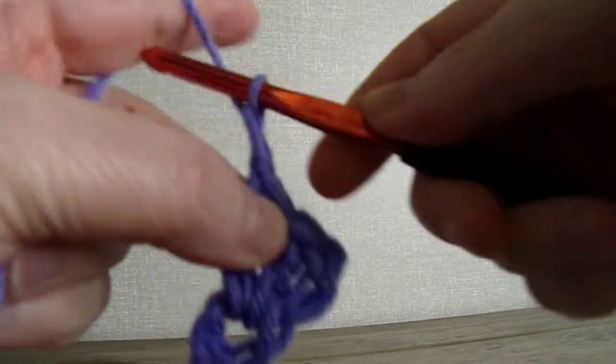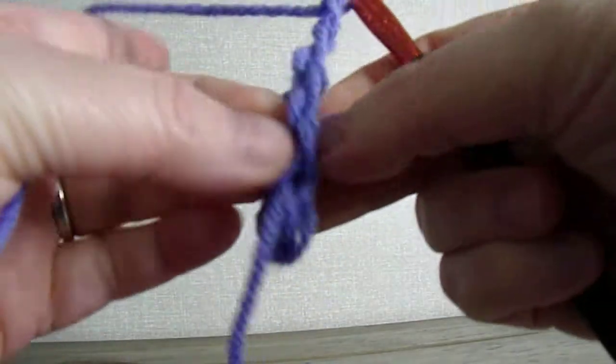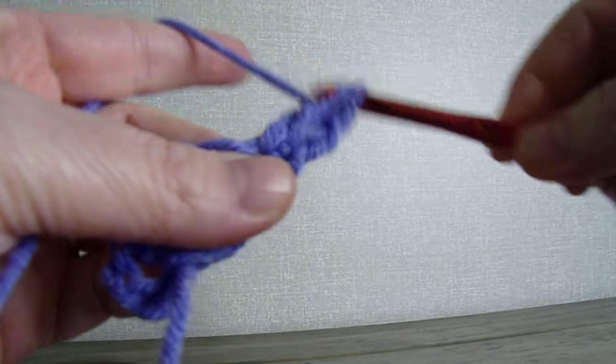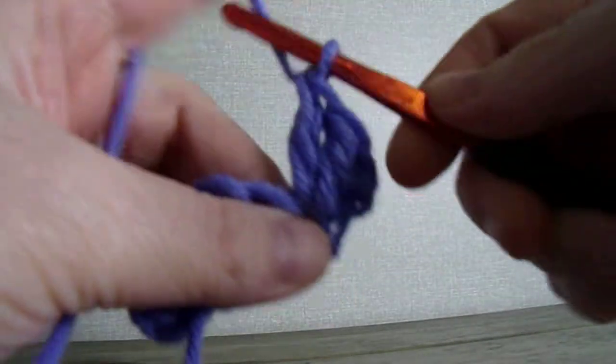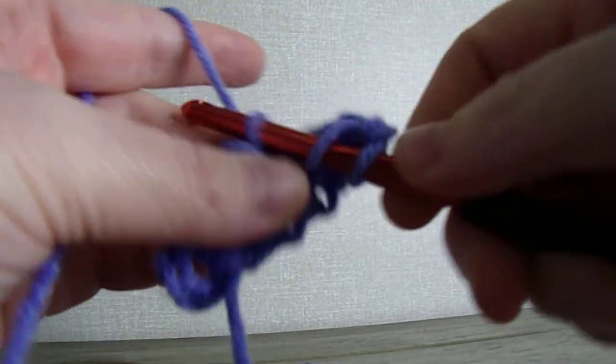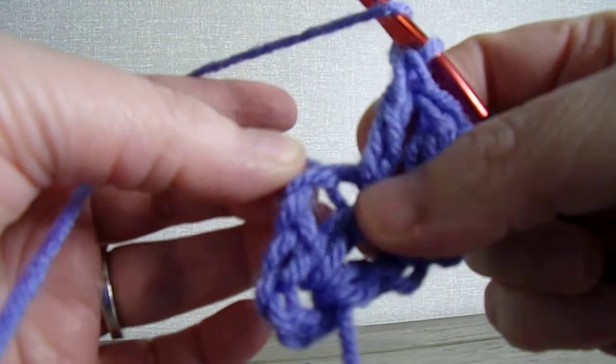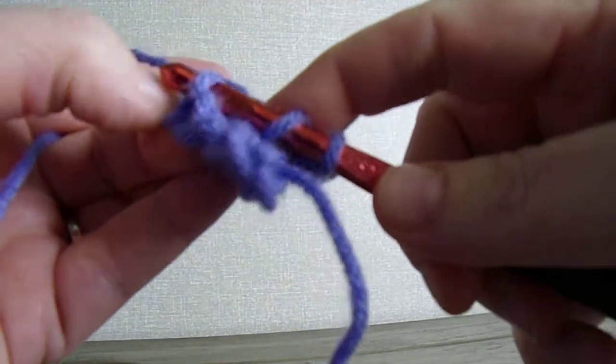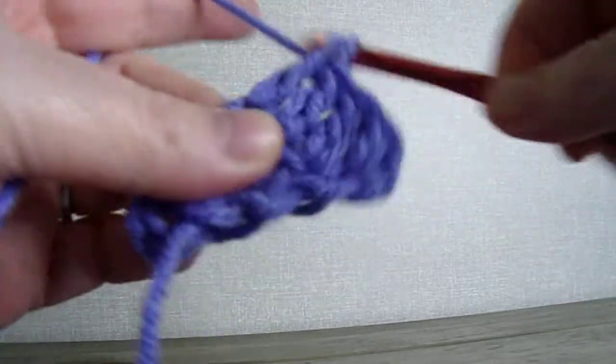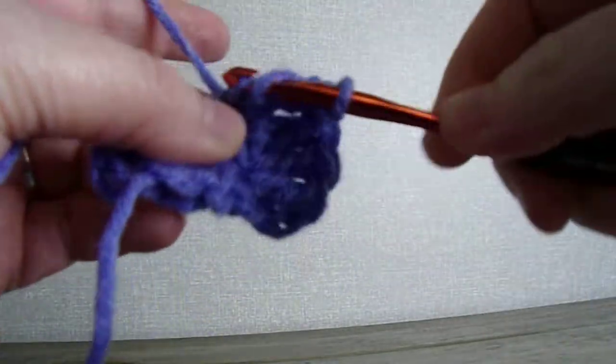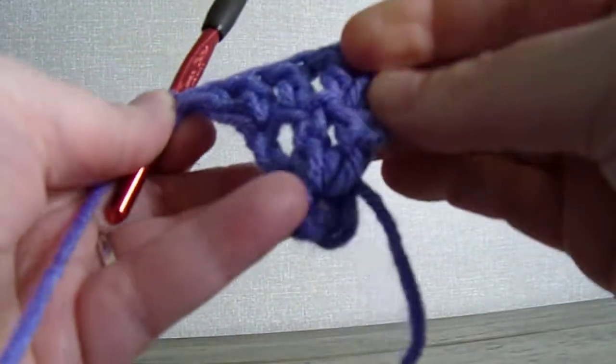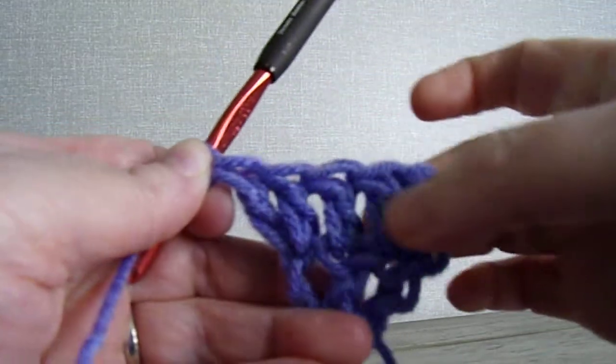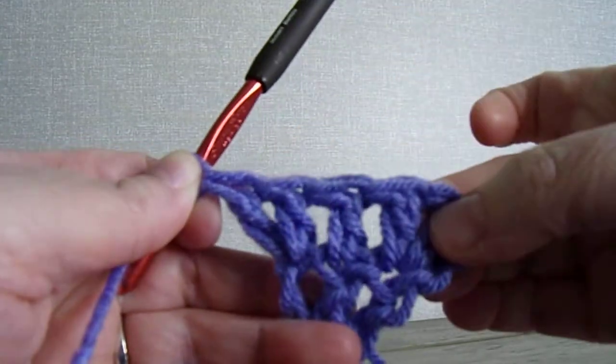Next, you're going to chain 2 to turn your work. Into the first stitch, place two double crochets—it's a corner stitch. Next, place a double crochet into the middle stitch. Into this very last stitch, which is kind of hard to get to, you're going to place two double crochets. What we're doing is increasing on both sides on every row. This is the pattern.